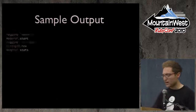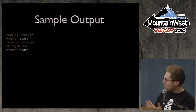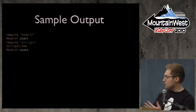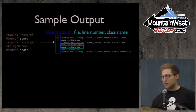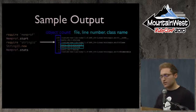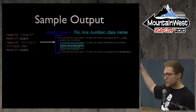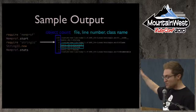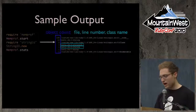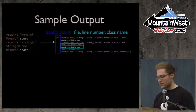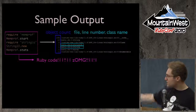Here's how you might use the gem: you require memprof, call Memprof.start, and require other stuff. The output tells you not just that your process is using a lot of memory, but the actual numbers of objects being allocated at a specific file and line number — telling you exactly where you're leaking memory — and even includes the object type.